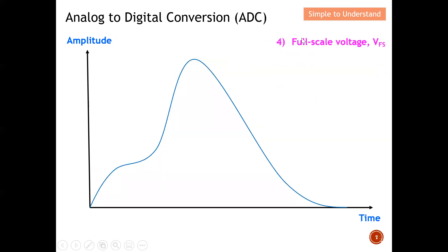Next, let's describe what is full scale voltage. This is the analog signal. Like I mentioned earlier, the voltage full scale basically starts from the very minimum point of the analog signal all the way to the maximum point. This range is quantified as voltage full scale.